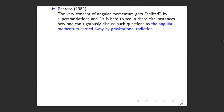In 1982, Penrose made the following statement: 'The very concept of angular momentum gets shifted by supertranslations, and it is hard to see in these circumstances how one can rigorously discuss such questions as the angular momentum carried away by gravitational radiation.' So because of this supertranslation ambiguity, the concept of angular momentum carried away by gravitational radiation — using the total angular momentum flux — is not well-defined.